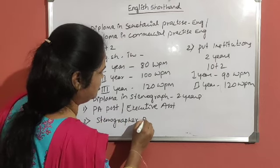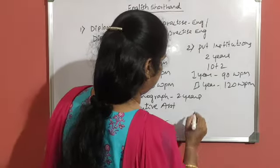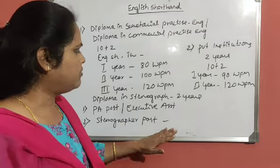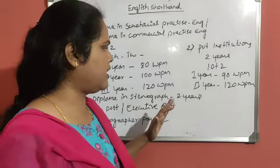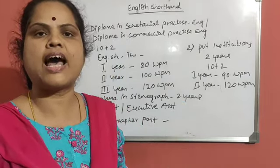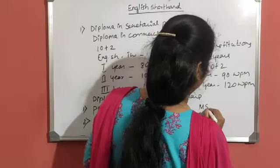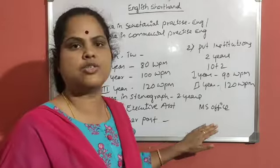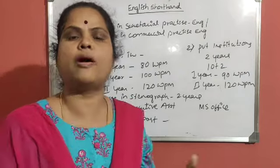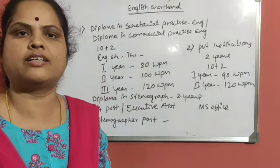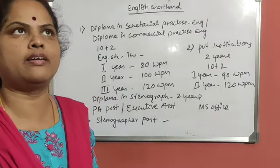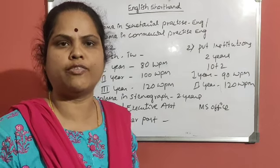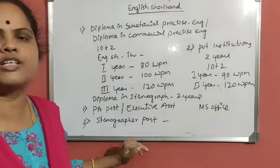The second category is Stenographer. Those who complete both the English Typewriting course and English Shorthand course will be called stenographers. Nowadays, more than typewriting, you must have basic computer knowledge — that is MS Office. After taking dictation, you will have to type it in MS Word, so MS Office knowledge is very important. There are many job opportunities for stenographers in both private and public sectors, including railways, banking, insurance companies, high courts, supreme courts, and the RTO department.